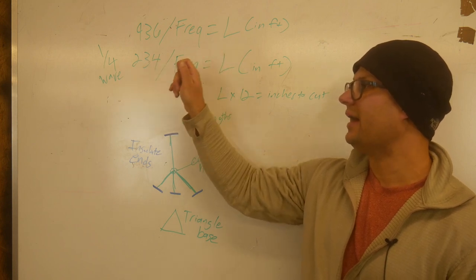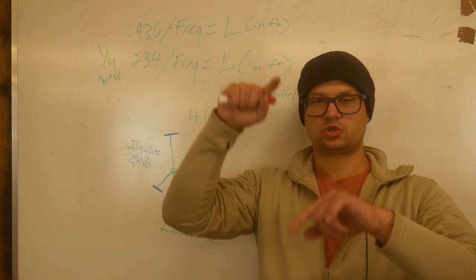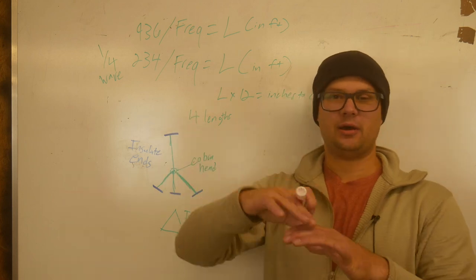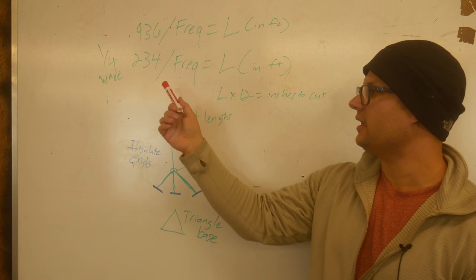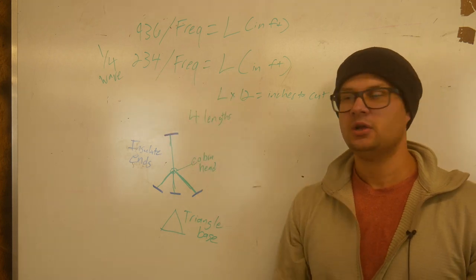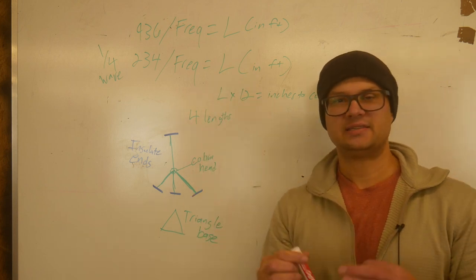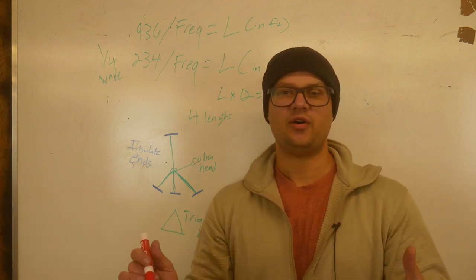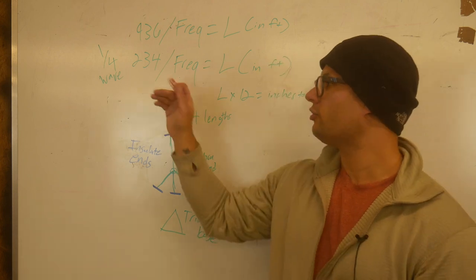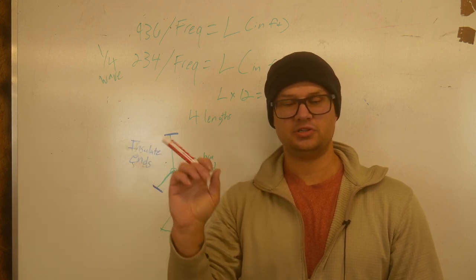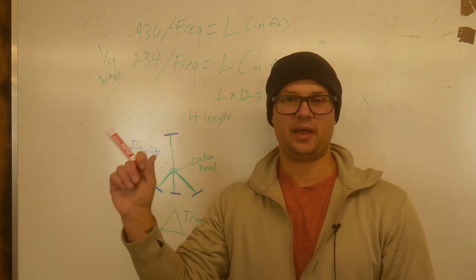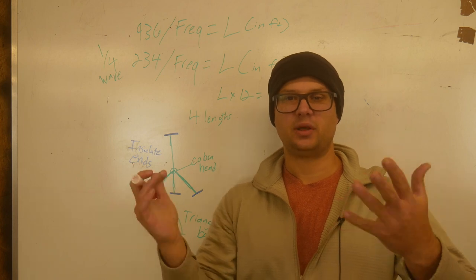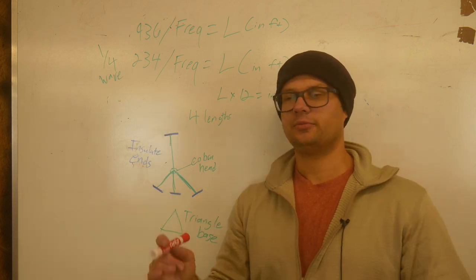234 divided by the frequency gives me my length in feet of each one of those triangle pieces. So we're going to have three lengths on the bottom to build a triangle, like a pyramid and then one length coming out the top. Each one of these lengths needs to be 234 divided by my frequency equals my length. So once I get that number, I multiply it by 12. That's how many inches I'm going to cut each length to. Keep in mind when you do your frequency, like if your frequency is 151.008, you're going to take 234 divided by 151.008. That's your formula.